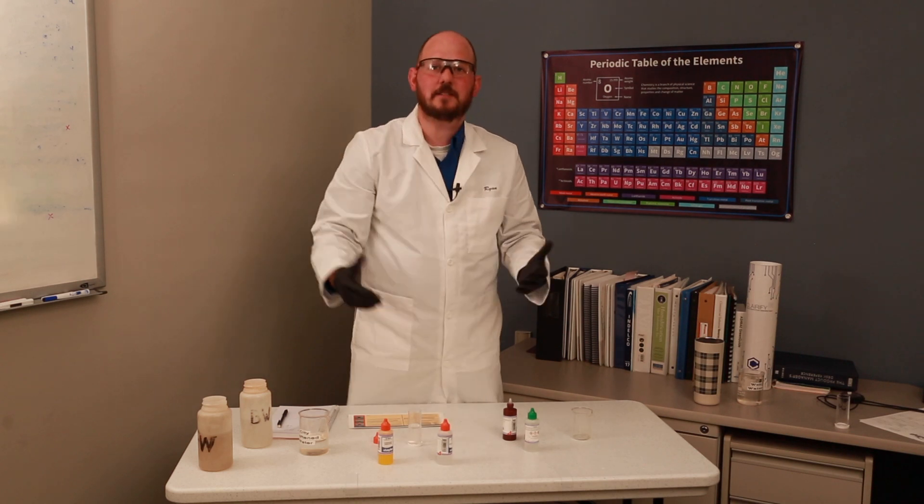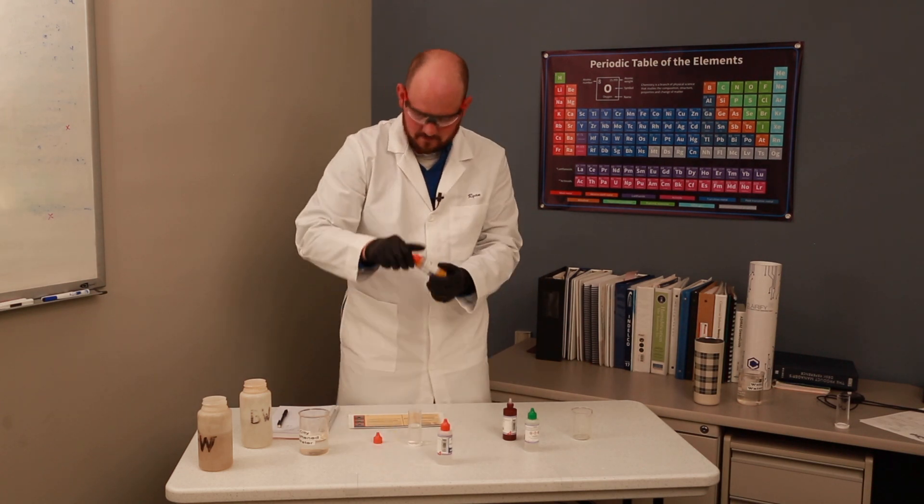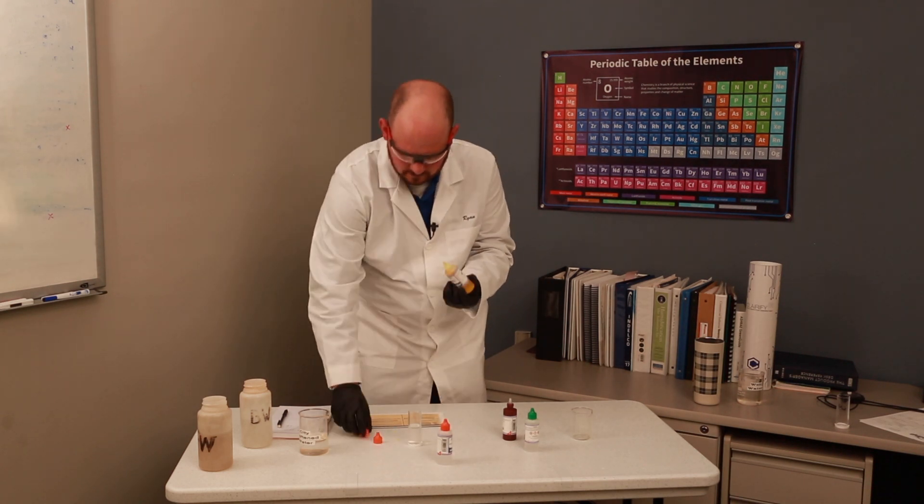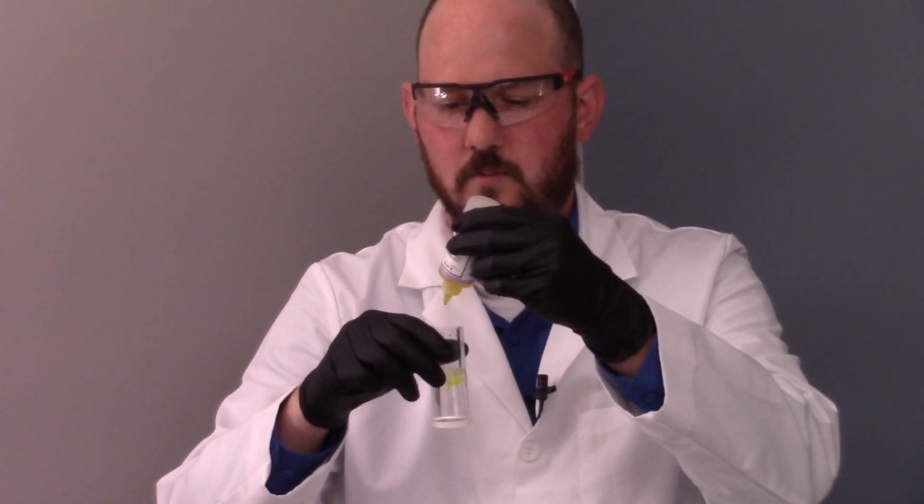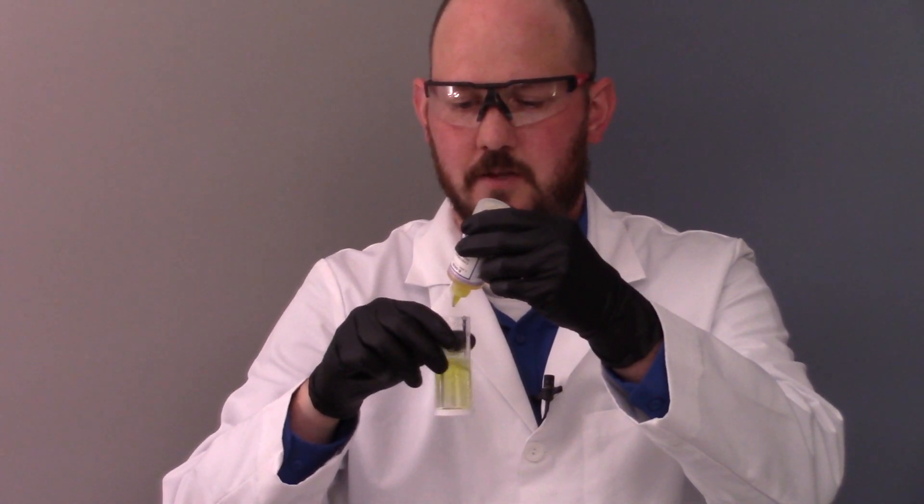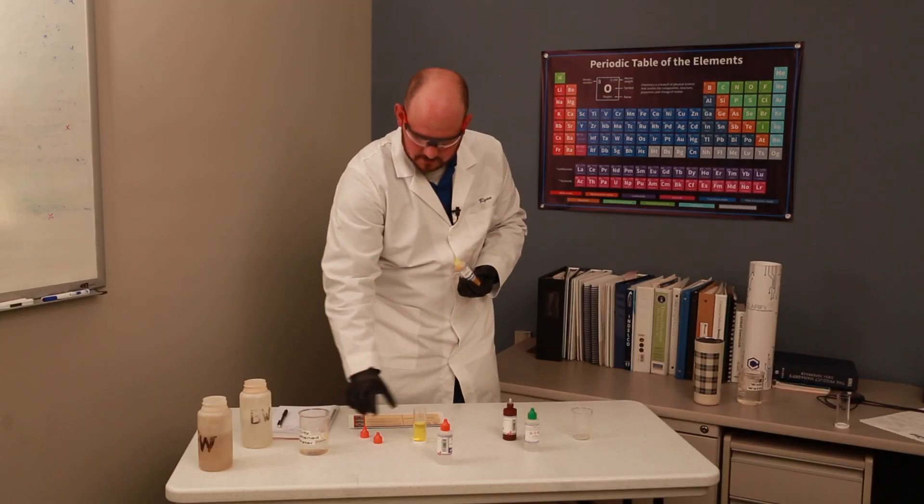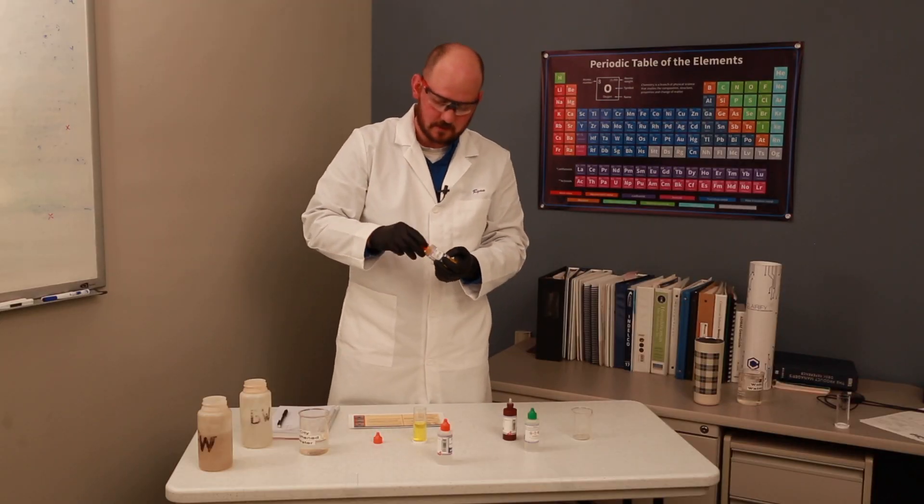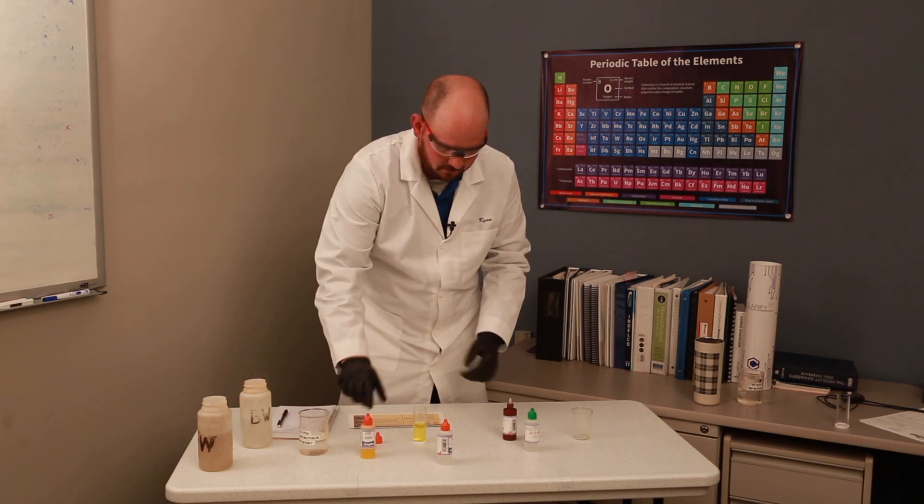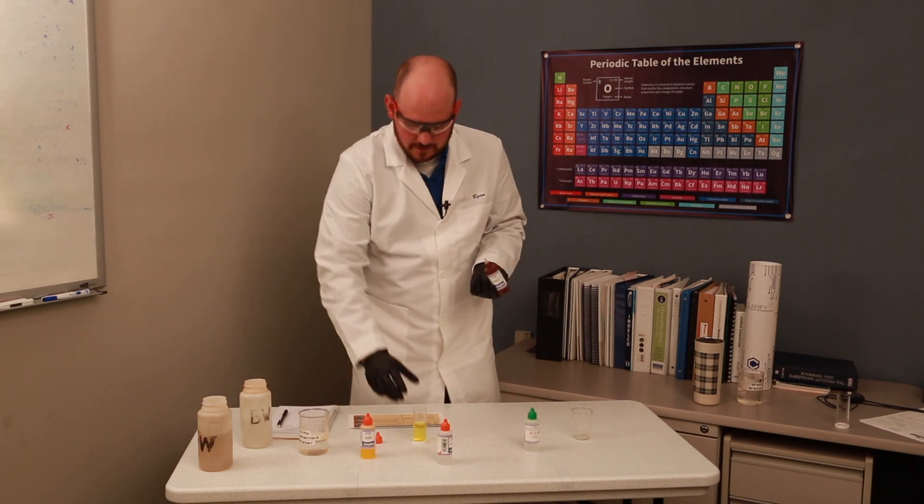The next step again is to add the chromate indicator. Adding five drops again. We're back to that bright yellow color, just as we were before without needing the sulfuric acid. And we're going to look for that brownish red tint again, that's kind of murky.